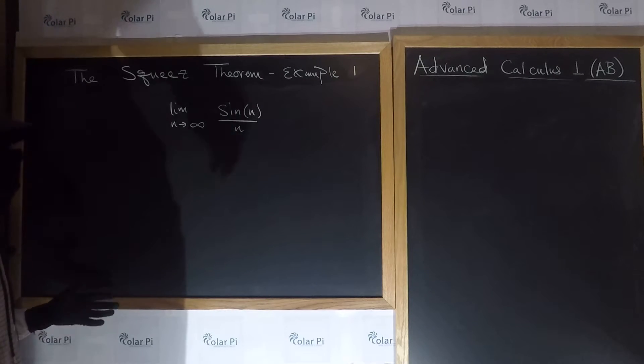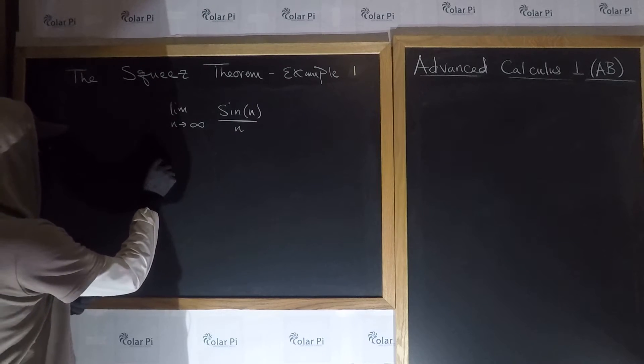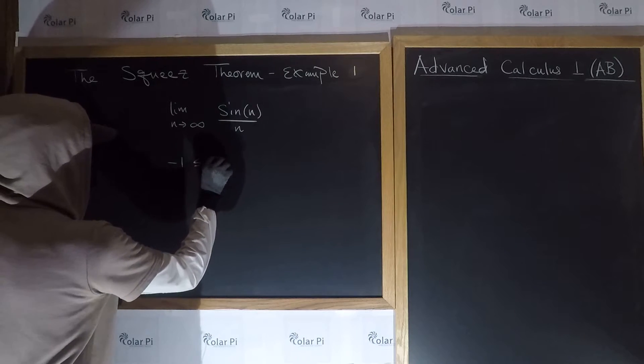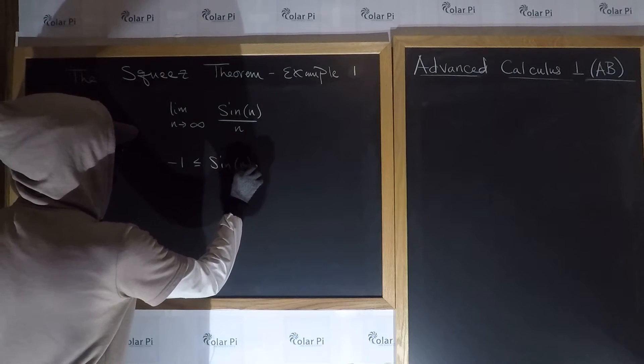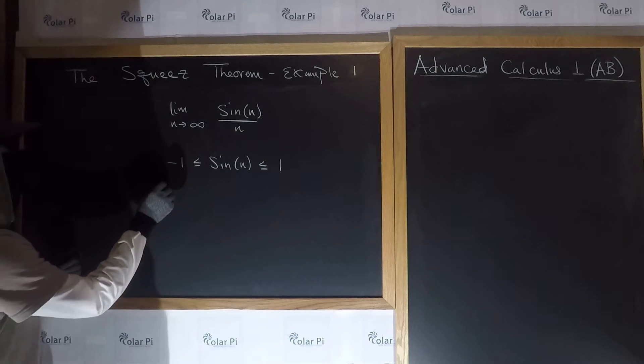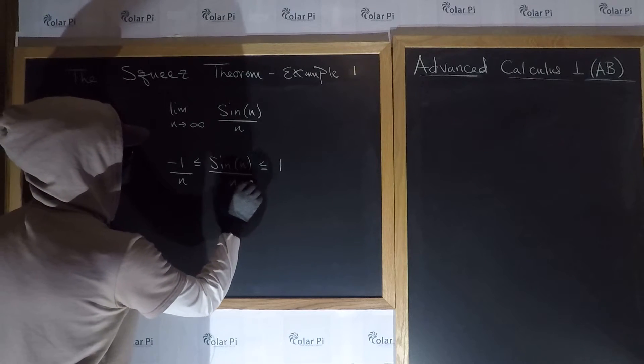And this is going to be much quicker and we don't need a visual for it. First, remember that negative 1 is less than or equal to sine n is less than or equal to 1. And if we divide all parts by n, this is what we'd get.